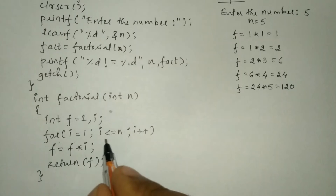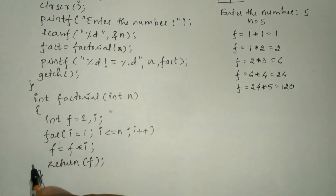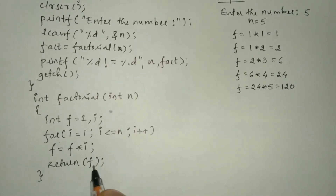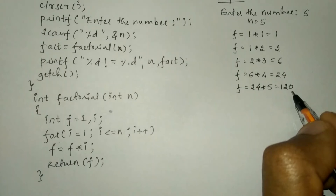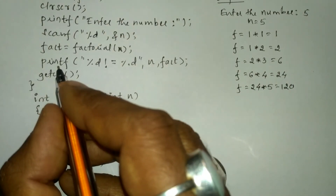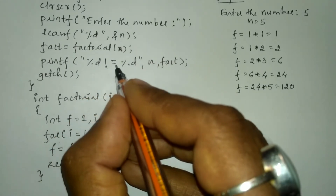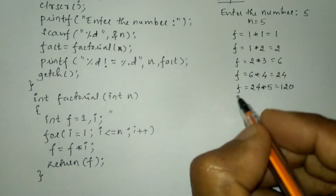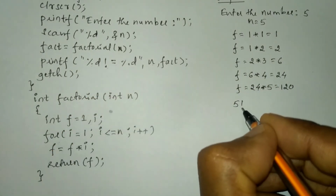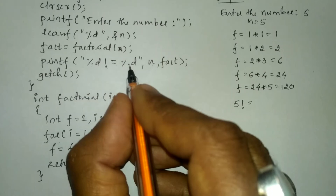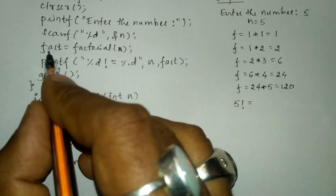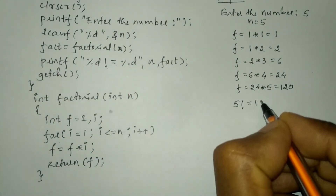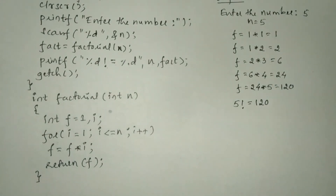After i becomes 6, the condition fails. Once the condition fails, control comes out of the looping structure and executes the next statement which returns the value stored in f. The value stored in f is 120. Back in the main function it prints: 5 factorial is equal to 120, since n is 5 and fact is holding 120.